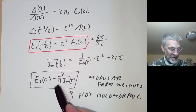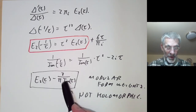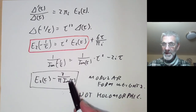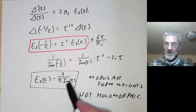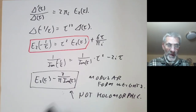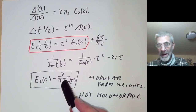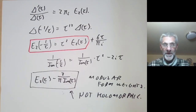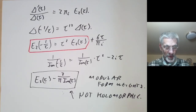These sorts of objects are sometimes called almost holomorphic or nearly holomorphic modular forms, meaning they are holomorphic except for factors of 1/Im(τ). There's also something called weakly holomorphic, meaning holomorphic on the upper half plane but allowed to have poles at i∞. I can never remember which is which, so I don't really like either term.